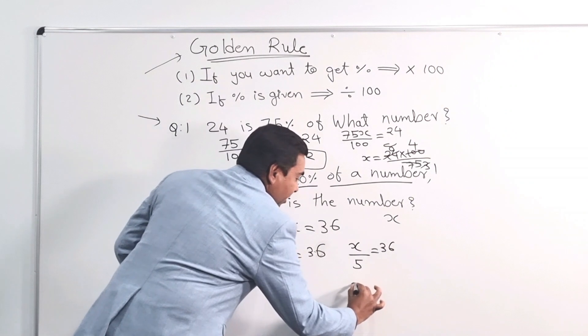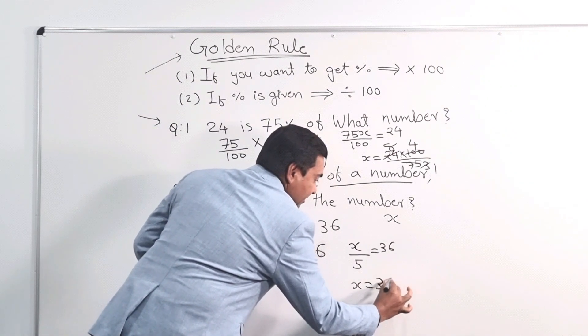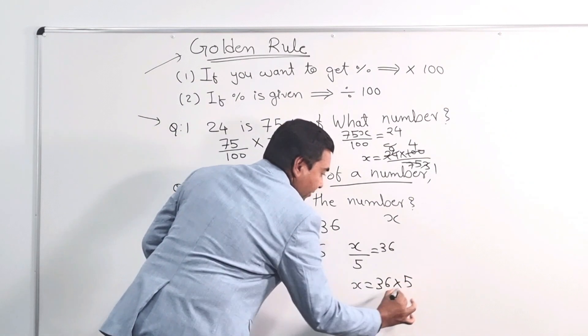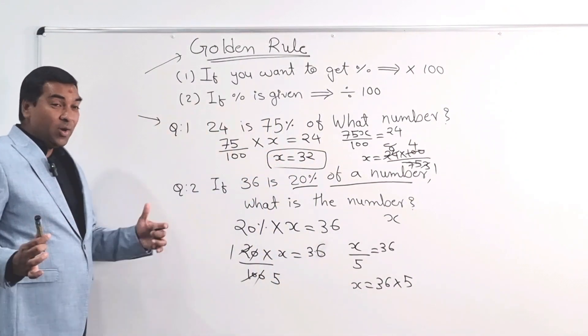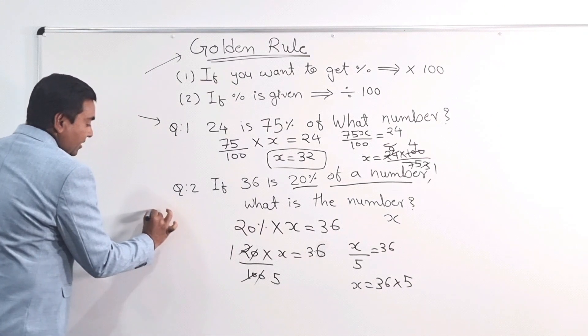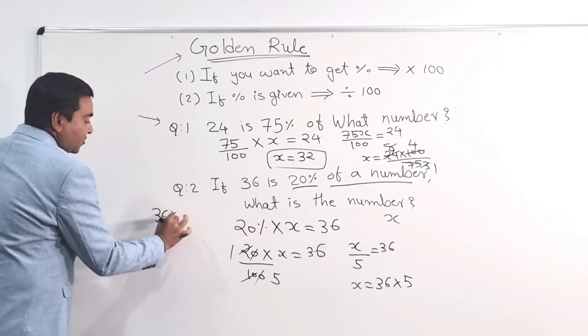So my X value is going to be 36 multiplied by 5. If you don't learn how to work it out 36 times 5 in a cooler way, I'm going to show you here. So let us say 36 times 5.